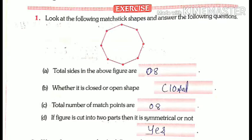Question A asks: total sides in the above figure are. As we counted, 8 sides are visible, so we write 8 as the answer. Question B is: whether it is a closed or open shape. All the sides are joined to each other, so it is a closed figure.